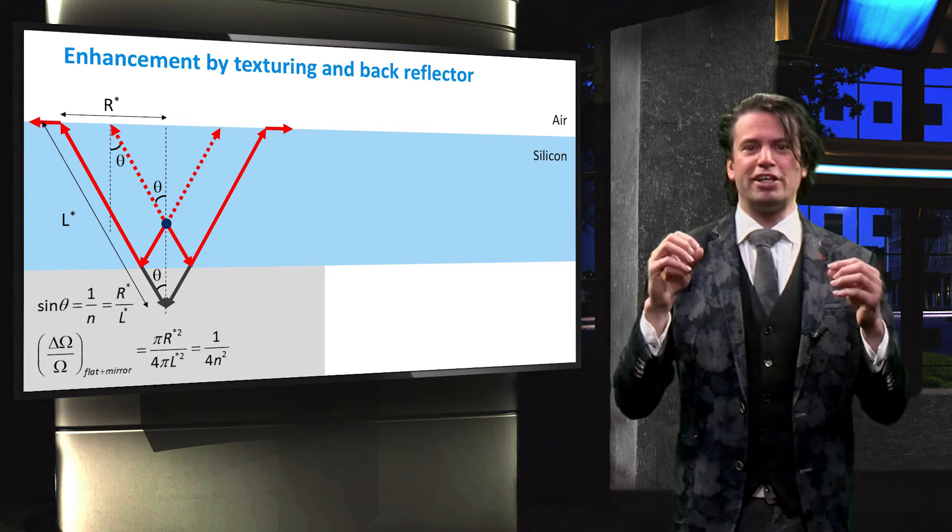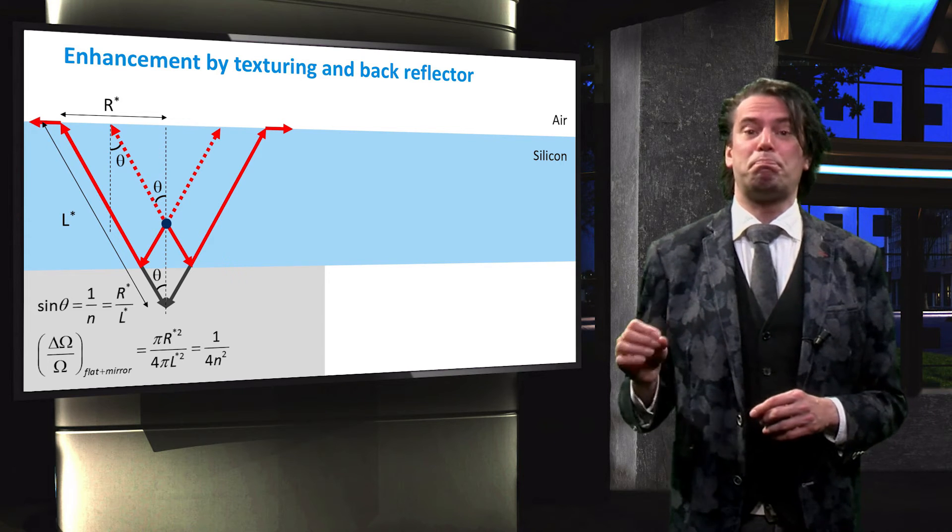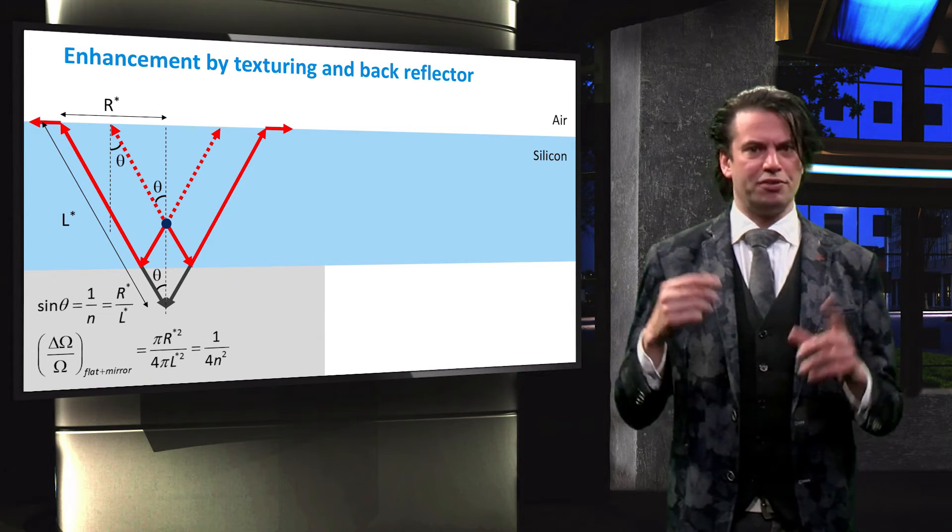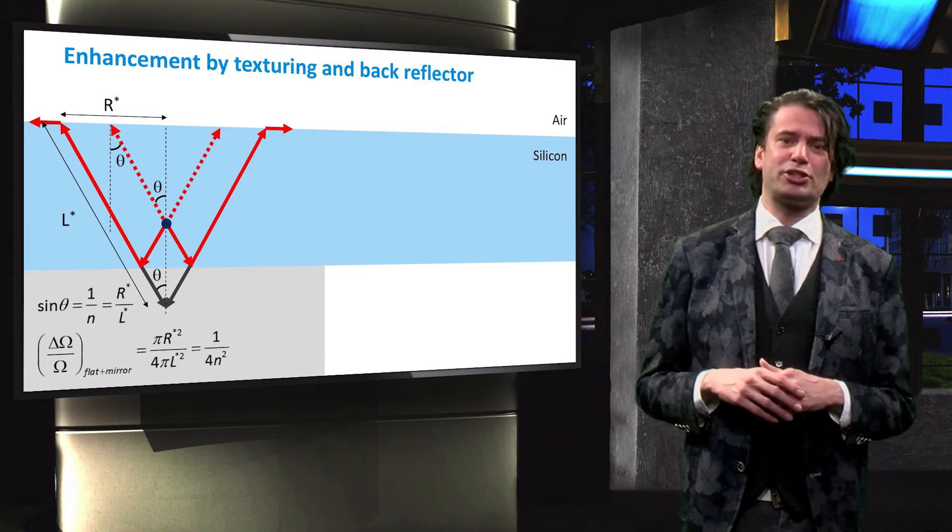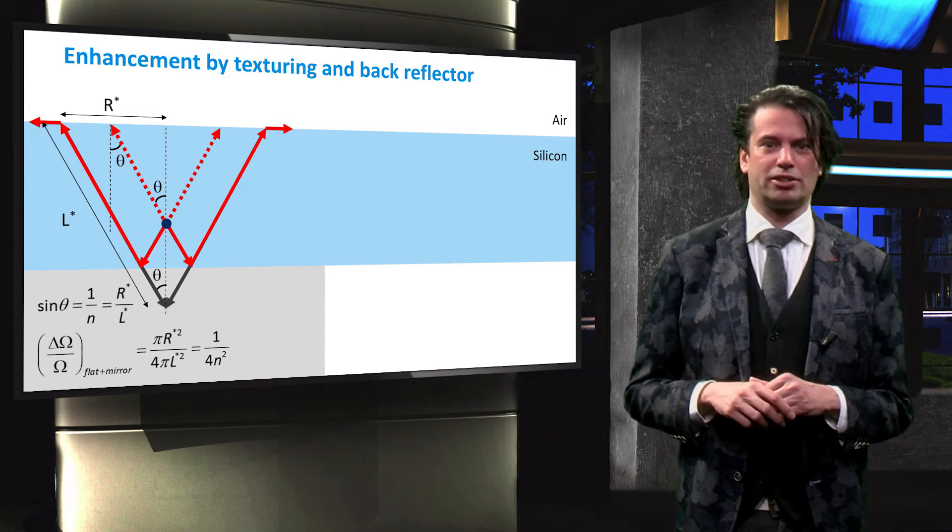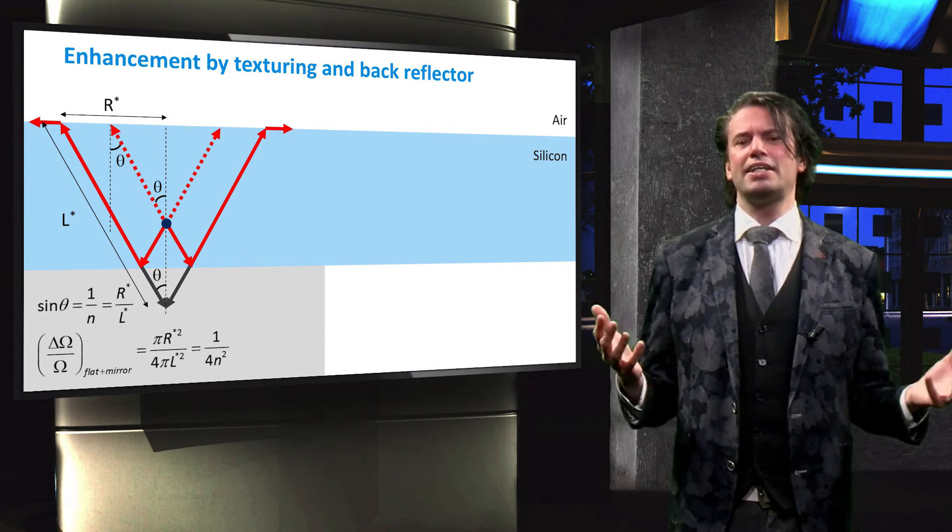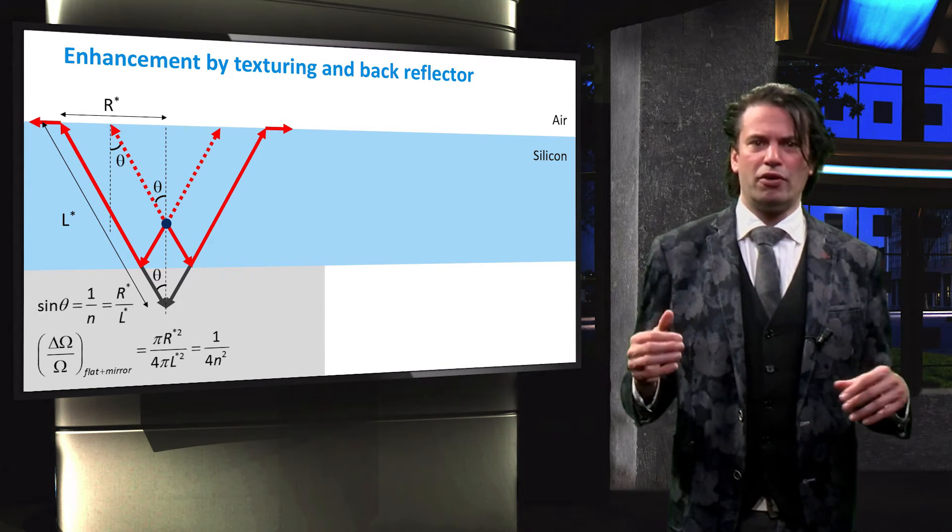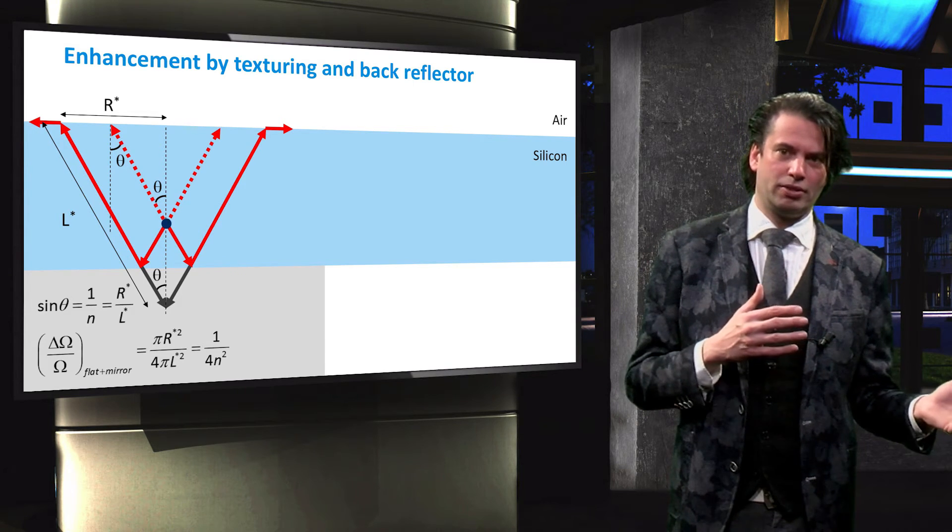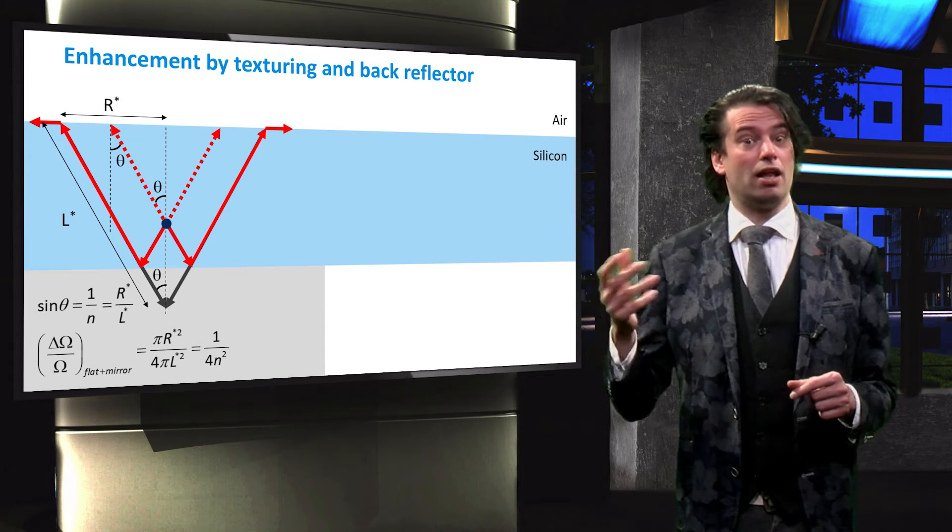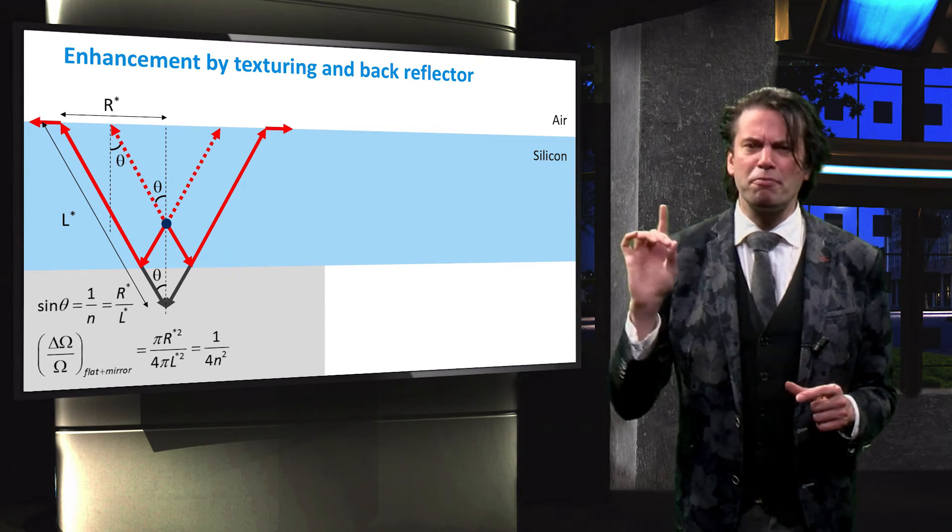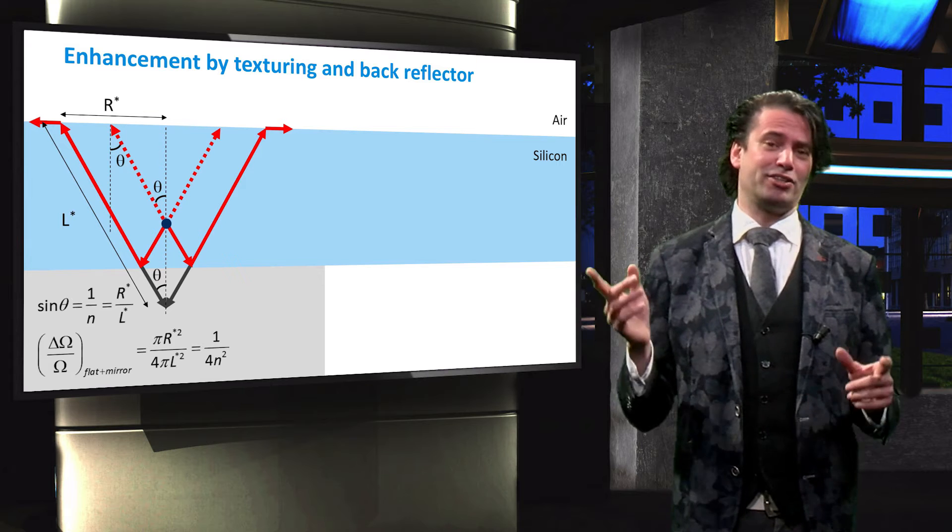We can now consider the light trapping enhancement in the case of a flat surface combined with an ideal back reflector. The cone of incidence still equals pi times R asterisk squared. Now, however, with an ideal back reflector light can reach our point from all directions. This means light is incident from a full sphere, rather than just a hemisphere. Omega therefore becomes the area of this sphere 4 pi times L asterisk squared. This simplifies to 1 over 4N squared.